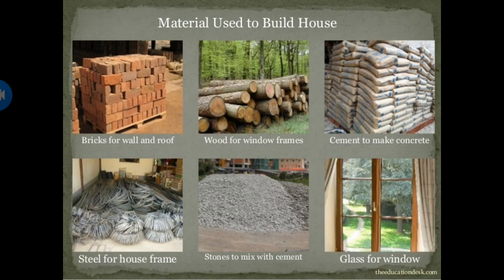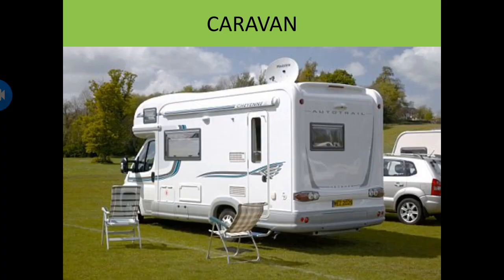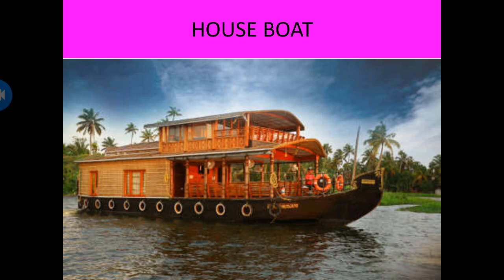By using these different materials, we make different parts of a house. But right now, let's see other types of houses. Caravan — this is the house on wheels. This house we can move like a car, so it is called a caravan. This is a houseboat — the house on the water, the house made in a boat, so it is known as a houseboat.